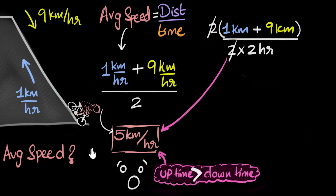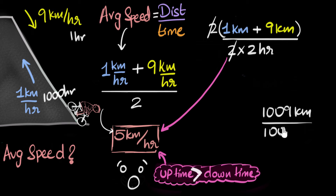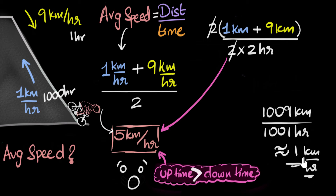It's very easy to see this if we exaggerate. Let's say he traveled upwards for a thousand hours and downward for only one hour. If he traveled up for one thousand hours, the distance traveled would be one thousand kilometers up and nine kilometers down — total one thousand nine kilometers. Total time would be one thousand one hours. The average speed would be approximately one thousand over one thousand, which is very close to one kilometer per hour. So hopefully this helps us understand the average speed should be closer to one because he spends more time at one kilometer per hour.